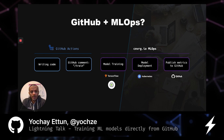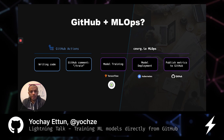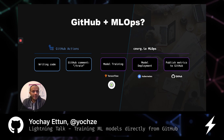This model training pipeline trains a TensorFlow model on a remote GPU, does model deployment on Kubernetes, and then eventually publishes metrics back to Git.